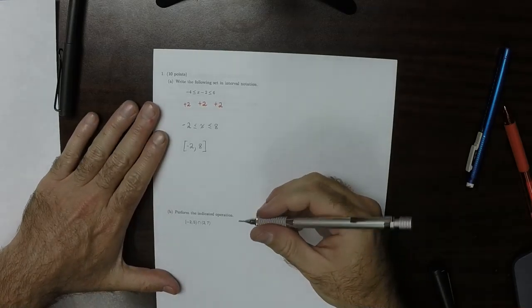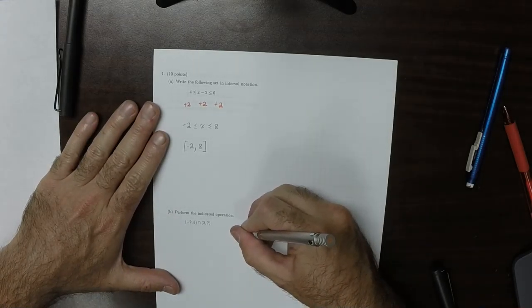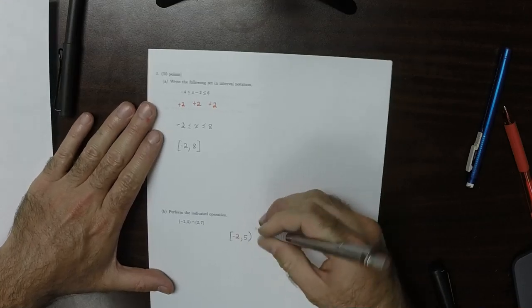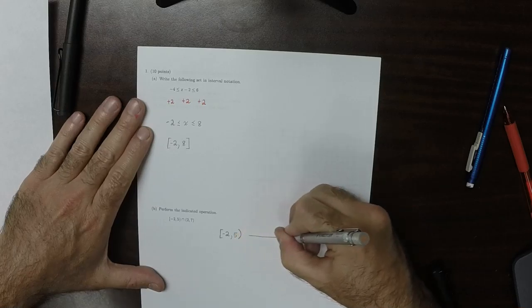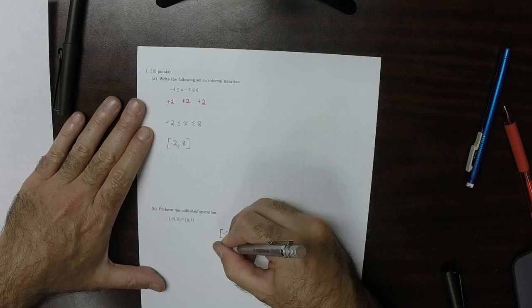And perform the indicated operation. OK. So this would be, I'll draw a picture. So negative 2 to 5, I'll draw a number line. And then 2 to 7.